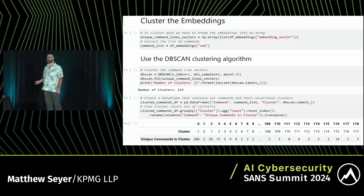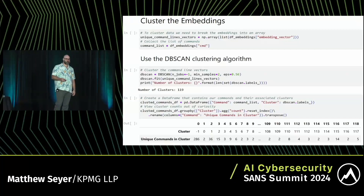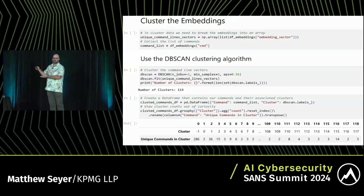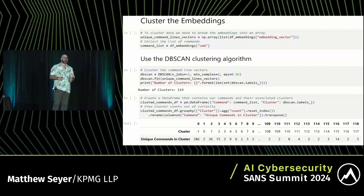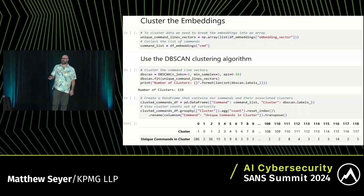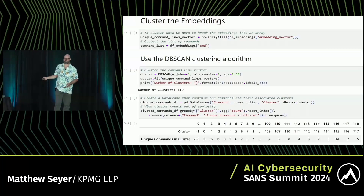Jess was up here earlier this morning talking about how important similarity is — that's what we're going to do here. We're going to use the DBSCAN clustering algorithm, feed it our vectors of data representing the essence of a command, and in the end we get 119 clusters — 119 groups of data. We just went from over 1,000 command lines down to 119 groups. 119 things is a lot easier to analyze than over 1,000 things. We can see how many commands are in each cluster — for example, cluster 114 has three commands, cluster 1 has 36 commands.